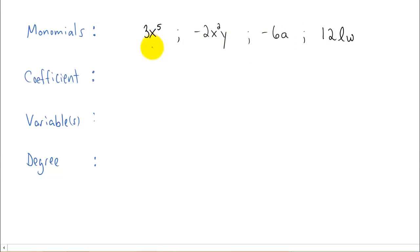Each one has a coefficient, each one in my examples have variables, and every monomial has a degree. So let's write down what these are for each of these four examples. The coefficient is the number that's on the term. So in this first example, the coefficient is three.